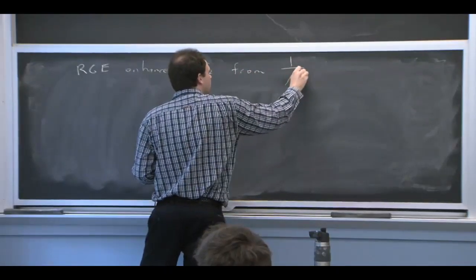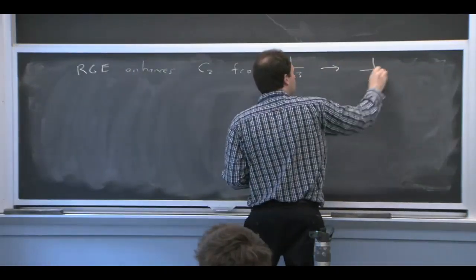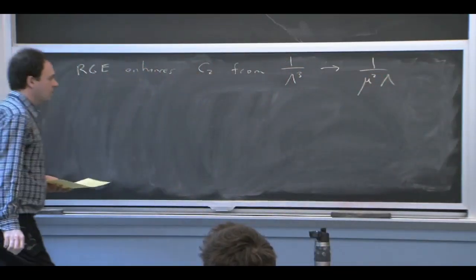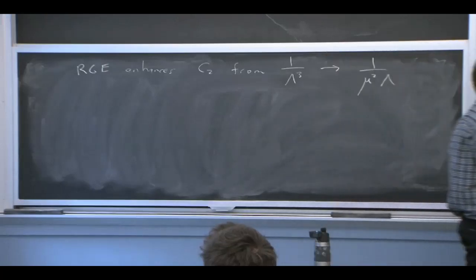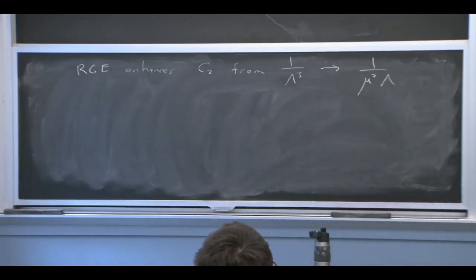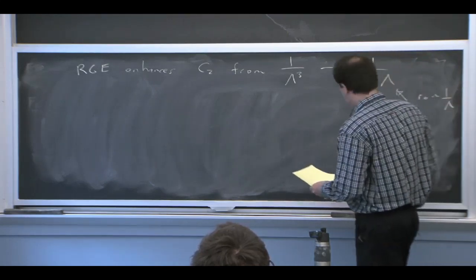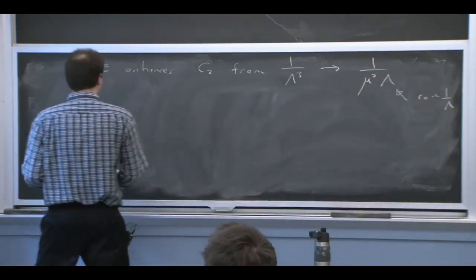This guy was going to 1 over mu squared lambda. And those powers of mu we see in this scheme, and the 1 over lambda comes from the r0.